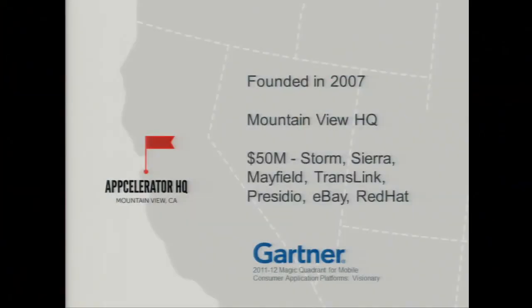A little bit about AppCelerator: Silicon Valley startup out of Mountain View, California, VC backed, been around since 2007. The original Titanium product was actually a competitive product to Adobe Air targeted towards desktops. There was a pivot about a year and a half later that specifically targeted the iOS platform. It turned out that the implementation strategy allowing you to write a native application using JavaScript, compiling down to iOS, giving you full access to the native look and feel, was very valuable to iPhone developers looking to build applications without having to leverage Objective-C.